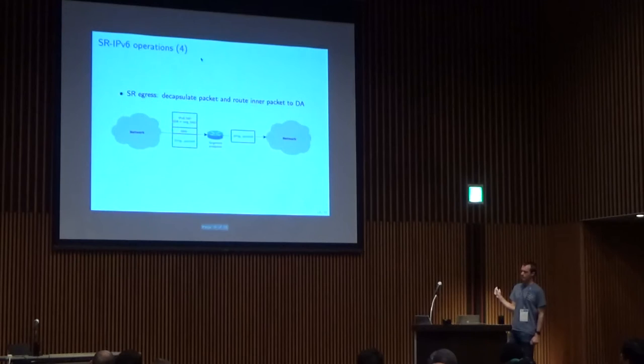The fourth operation is the egress. When a packet has been encapsulated into an outer IPv6 header with an SLRH, once it reaches the final segment, it is the egress node, and the egress node will simply remove the encapsulation and forwards the original packet to its original destination.